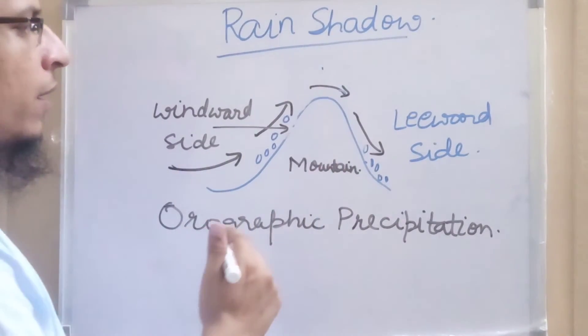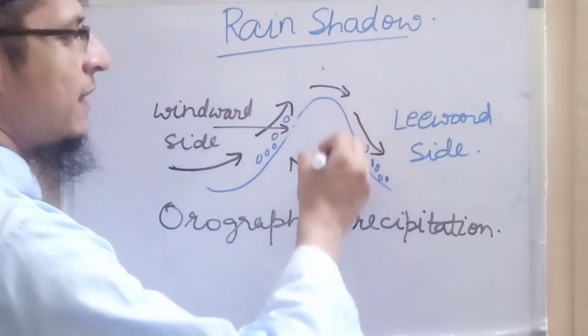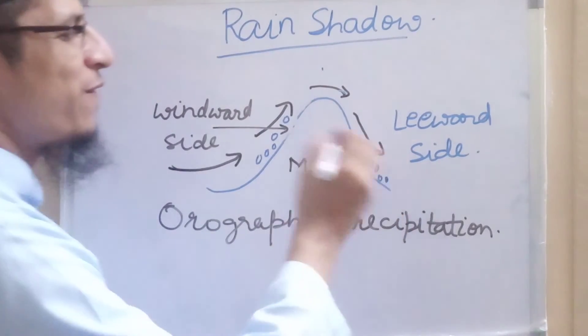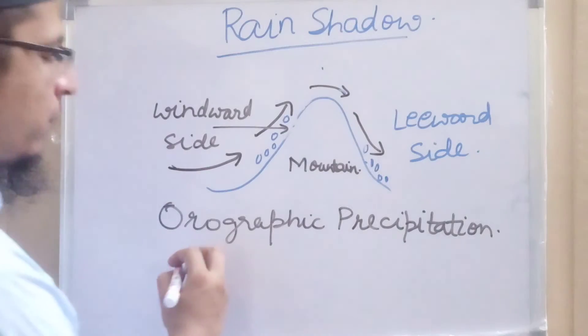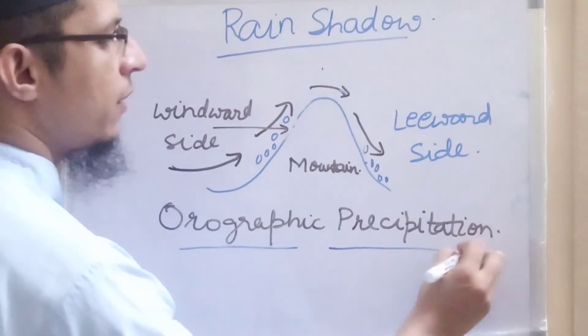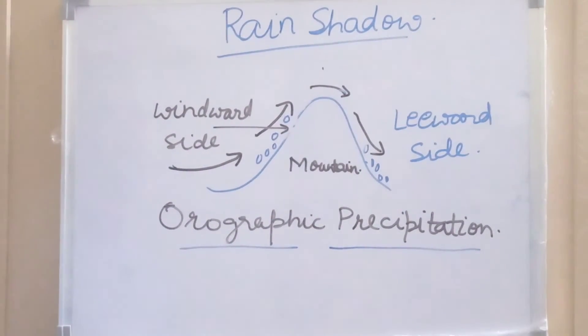So we say that this region has experienced only a shadow of rainfall. This happens mainly in orographic precipitation, that is, the precipitation caused by the barriers in the direction of wind.